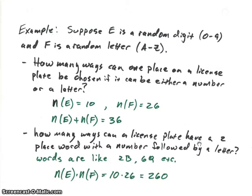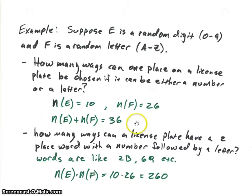Let's take a look at a couple examples. Suppose E is a random digit, 0 through 9, and F is a random letter, A through Z. First, we're going to look at how many ways can we make one place on a license plate. A place on a license plate can be either a number or a letter — it can't be both. So by the sum rule, the number of numbers is 10, the number of letters is 26, and therefore the number of possibilities for that one spot is 10 plus 26, or 36.